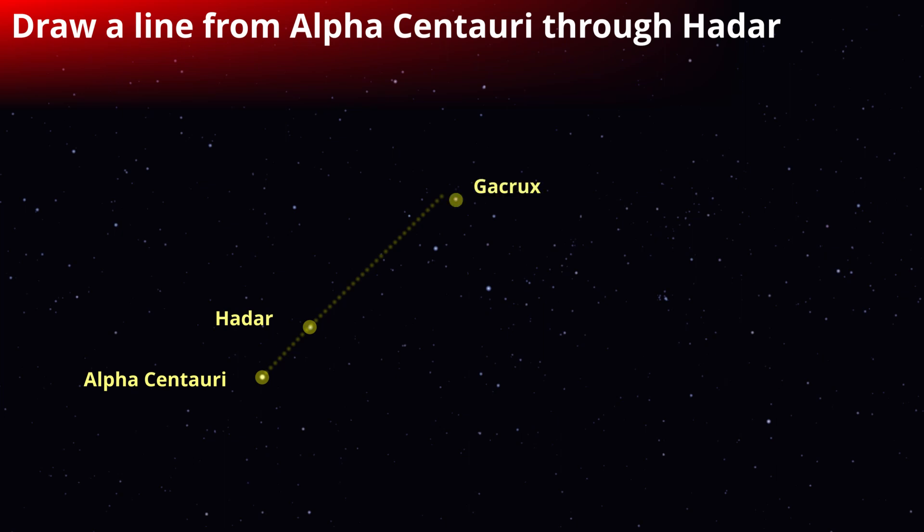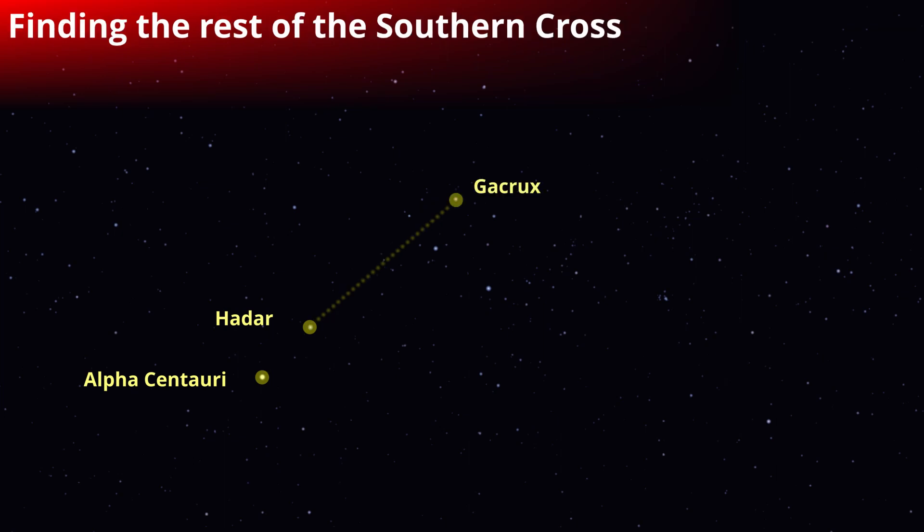To the right of the line between Hadar and Gacrux, about two-thirds of the way along, are two other bright stars. The one close to the imaginary line is B-Crux, and the other one about half a fist width further away from the line is A-Crux.